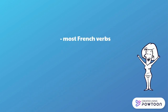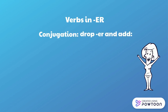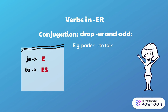Most verbs in French end in -ER at the infinitive — the neutral form of the verb — and they are regular. To conjugate these verbs, drop the ending -ER and add the following endings. For 'je', add -e. For instance, with the verb 'parler' (to talk): 'je parle.' For 'tu', add -es: 'tu parles.'